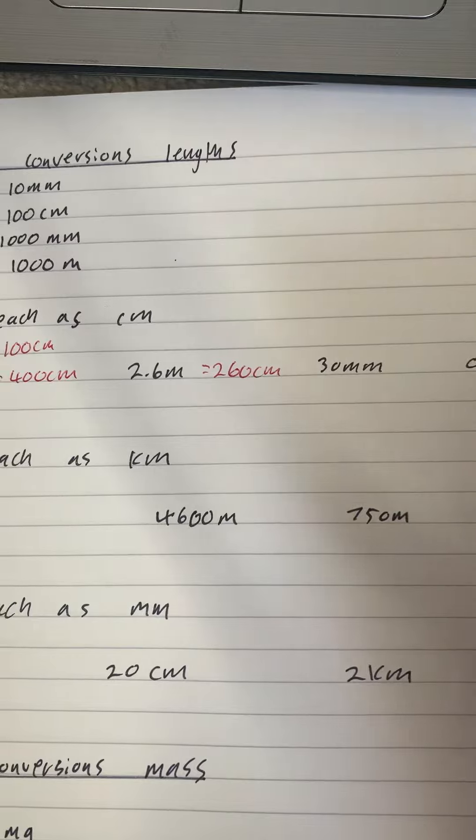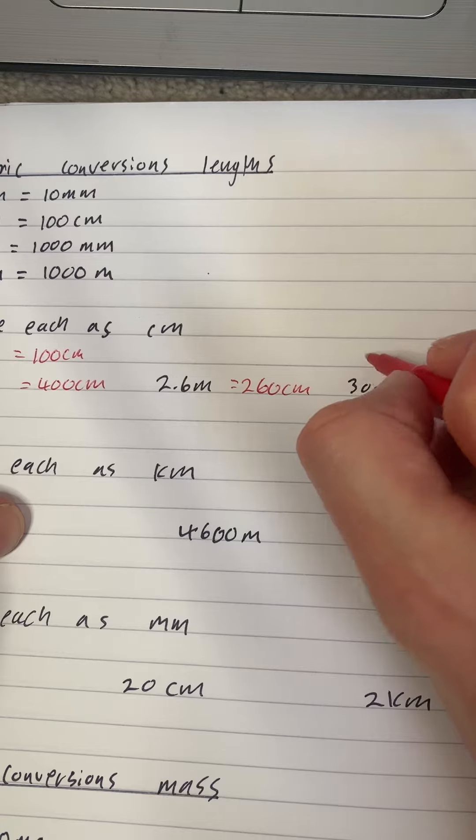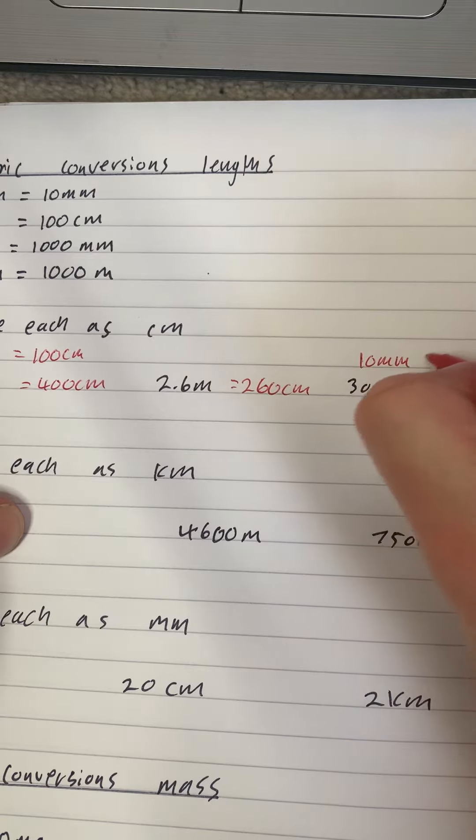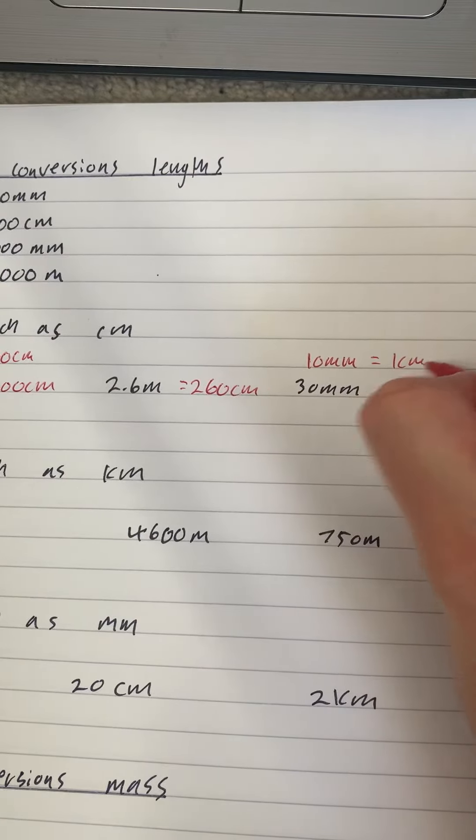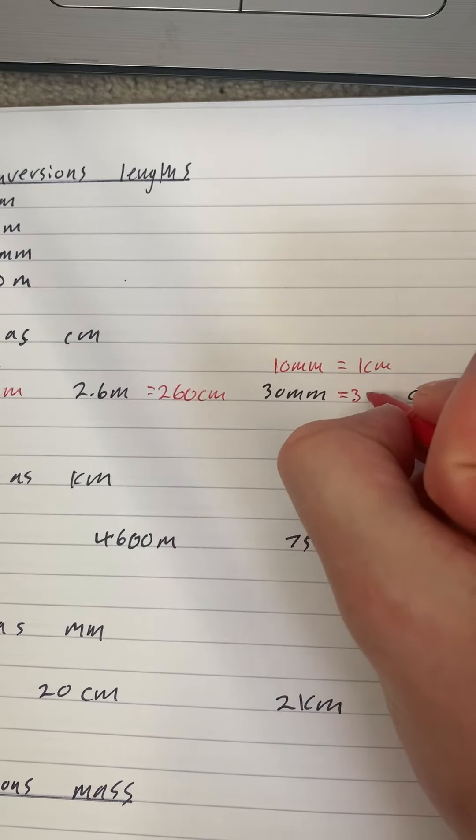Now we want to put this into centimeters, and one centimeter is 10 millimeters. So 10 millimeters is one centimeter. So to get from here to here, we divide by 10. When we divide that by 10, we get three centimeters.